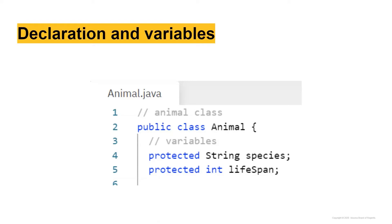We'll talk about that in a little bit. Notice I don't initialize these variables because there isn't one final species for all animals — animals have many different species. So that would be something that is initialized when you create a specific instance of this class as an object.